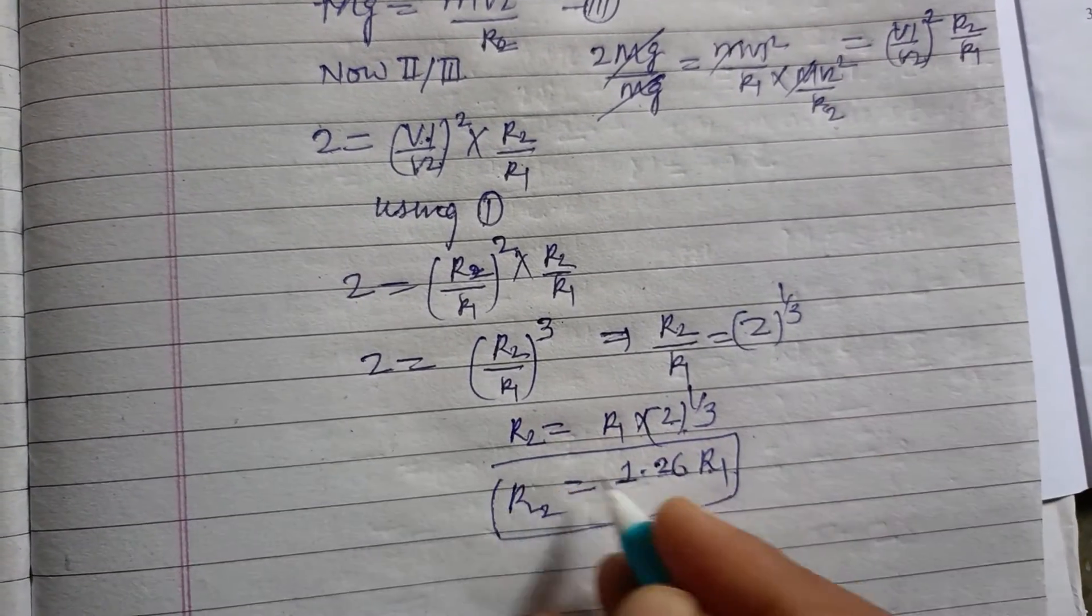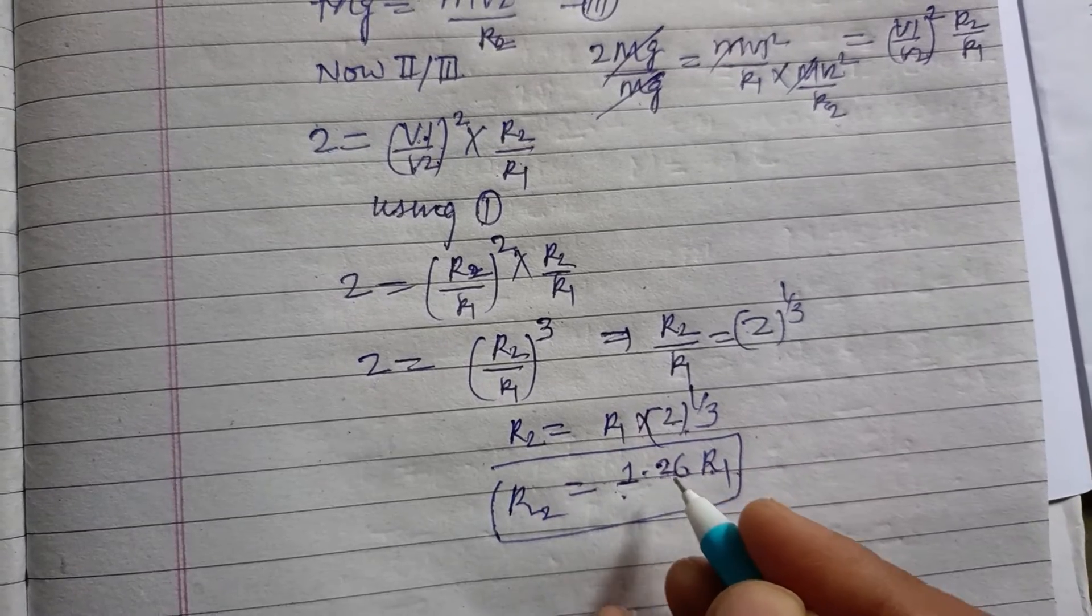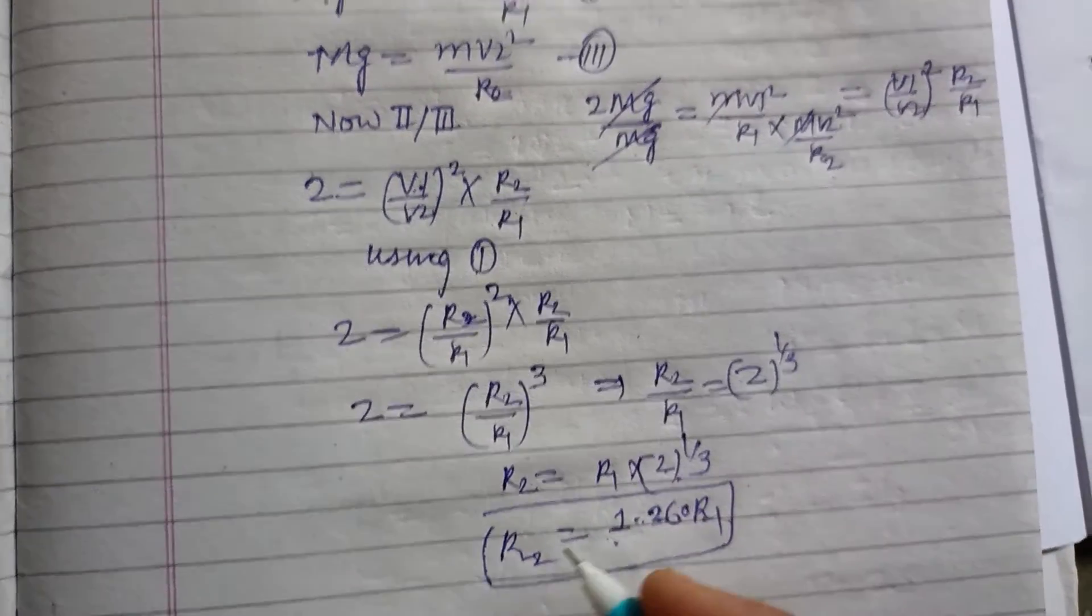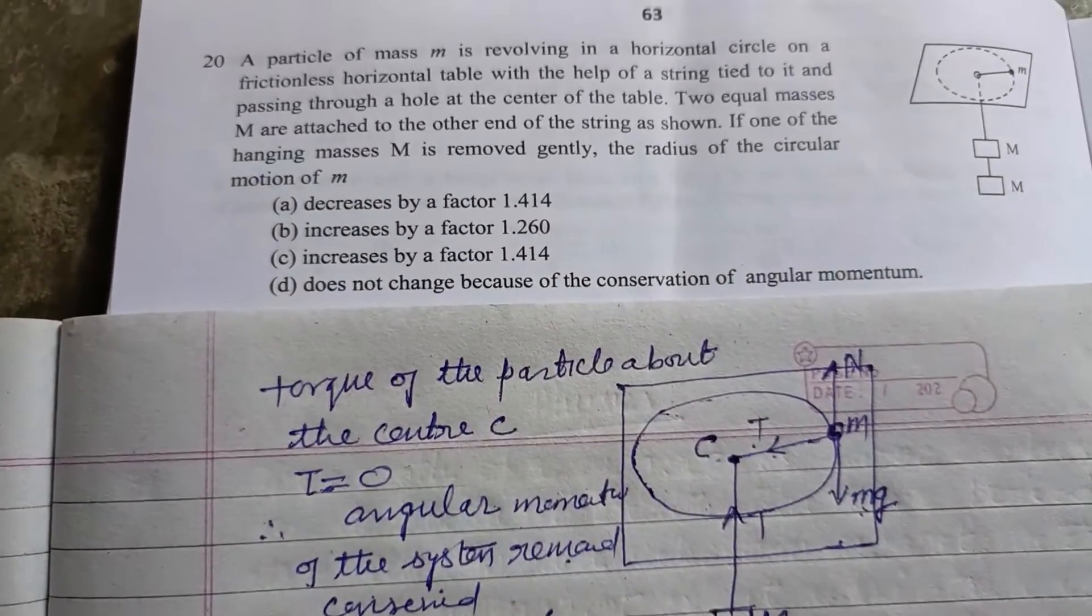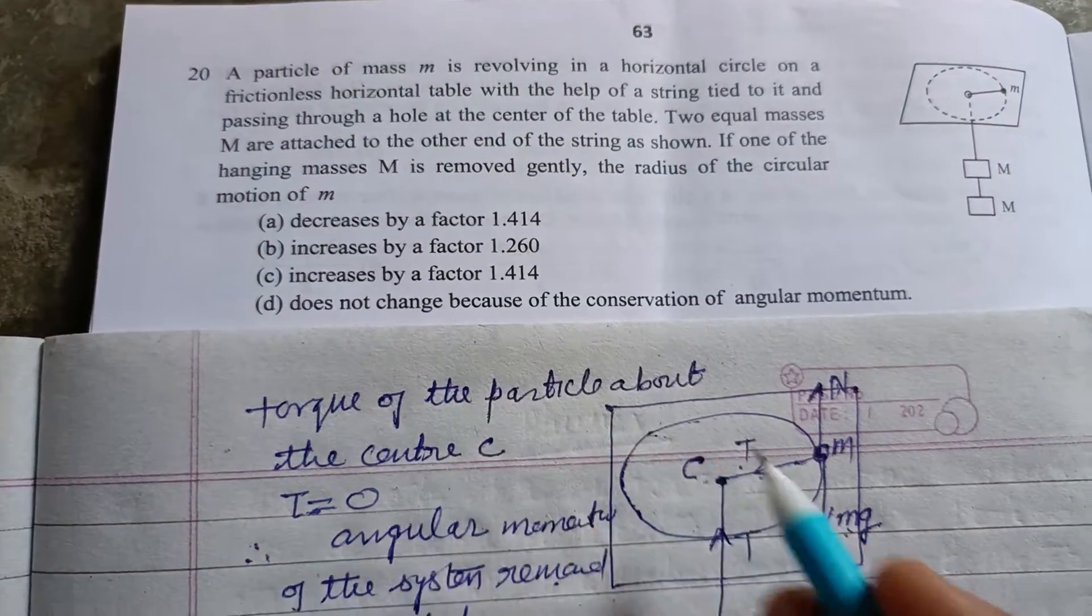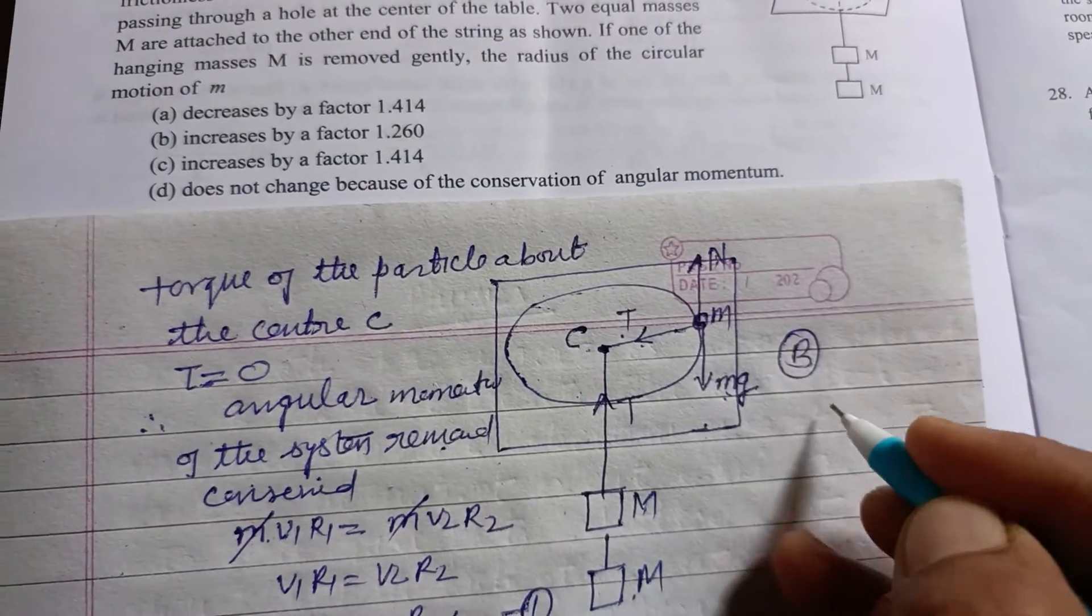So the radius is increased by the factor 1.260, which is given in option B. Therefore, option B is correct.